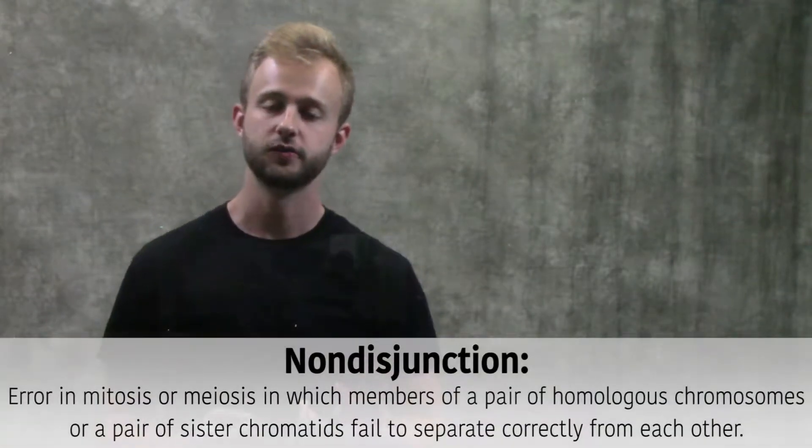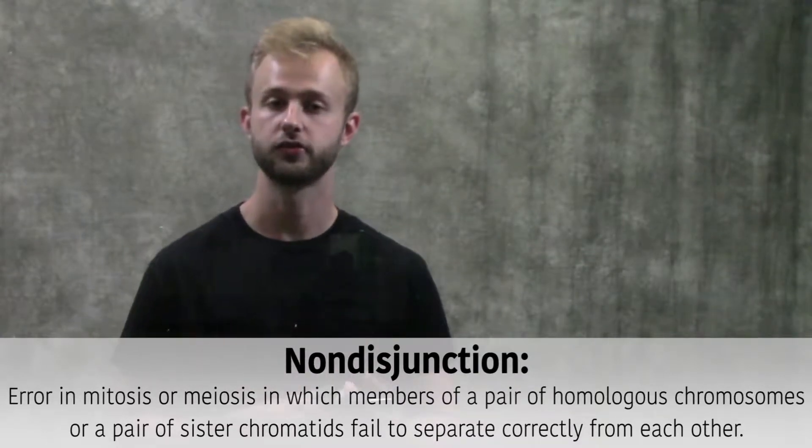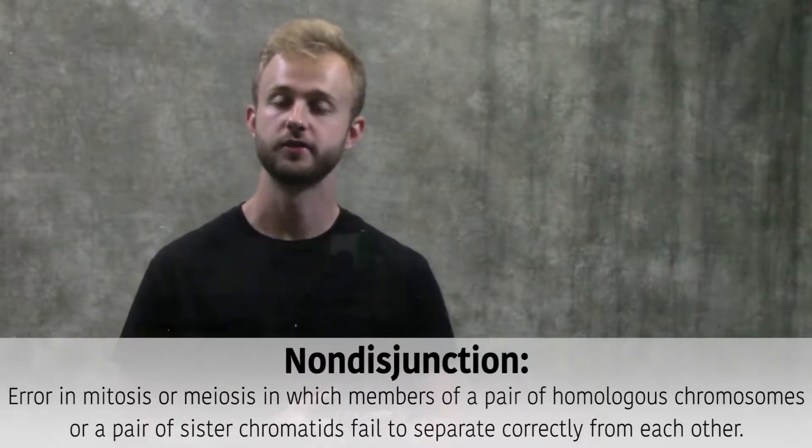So in non-disjunction, what happens is either homologous pairs of chromosomes don't get separated properly during meiosis I, or the sister chromatids don't get separated properly during meiosis II. So either way, it's going to result in one gamete having two copies of a particular chromosome and the other gamete having none.